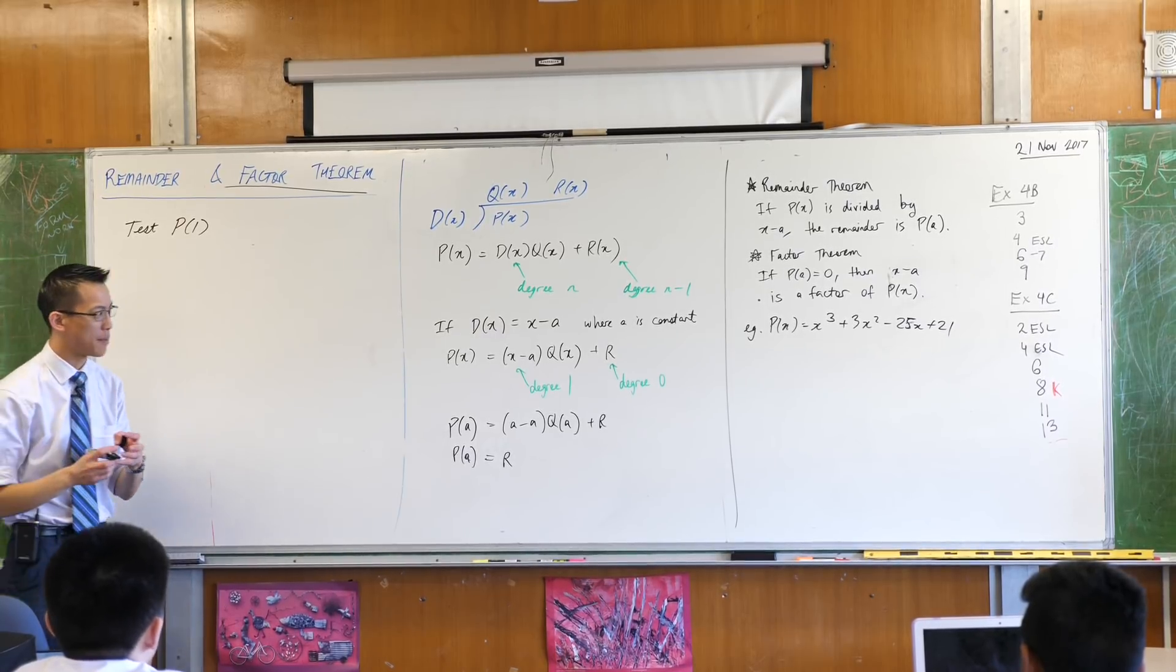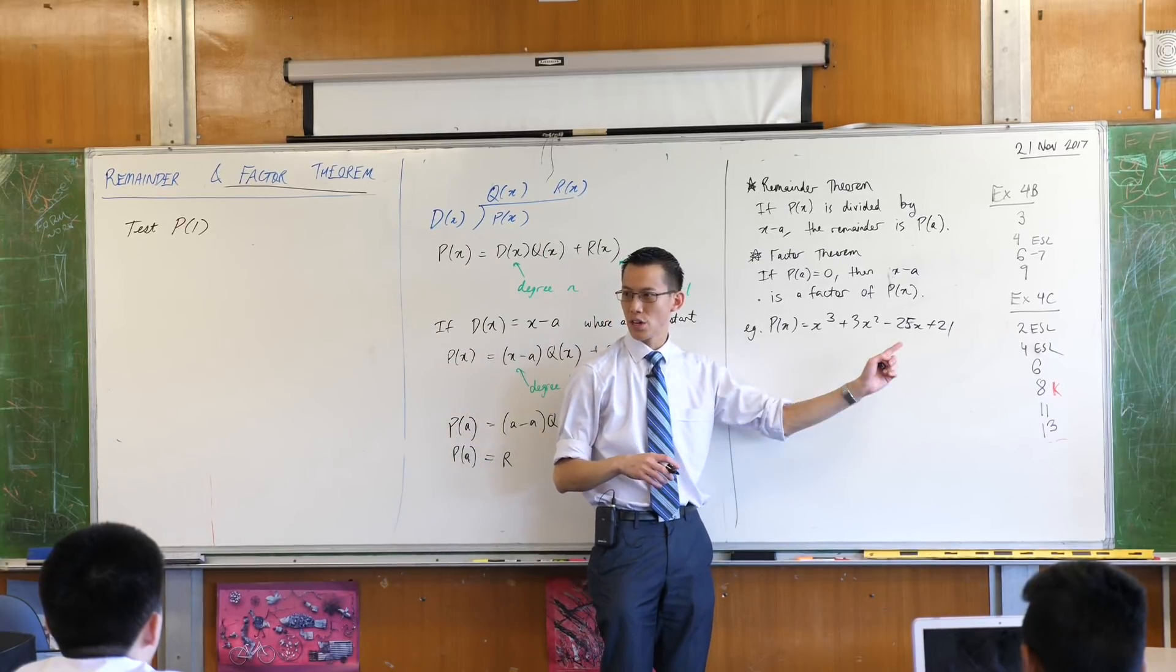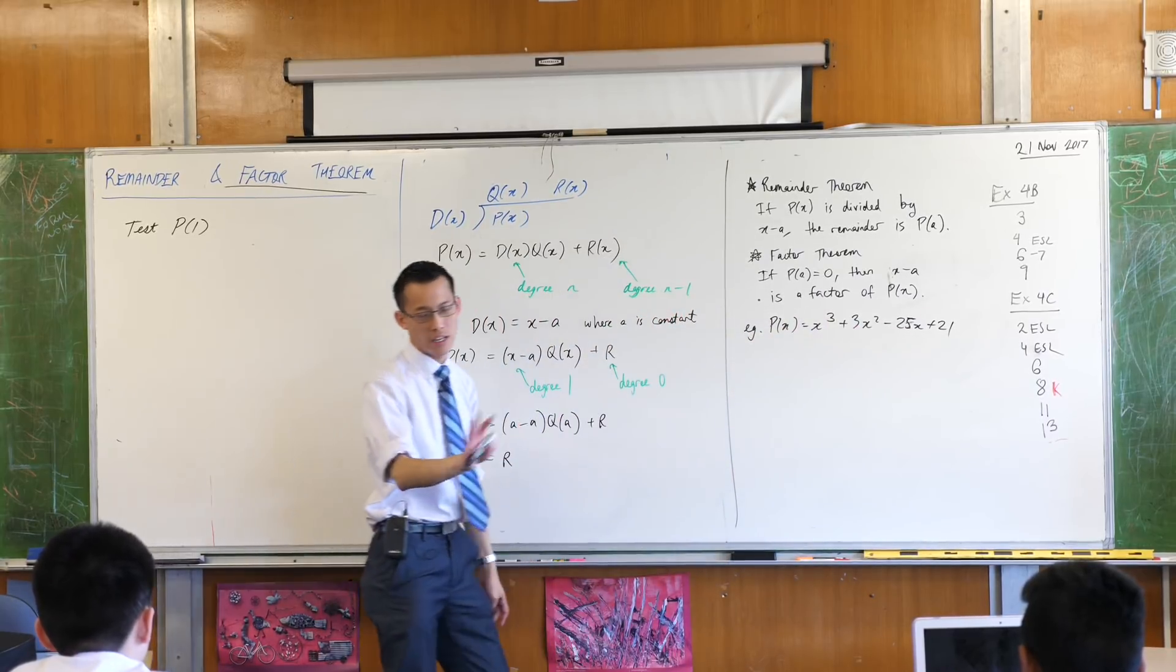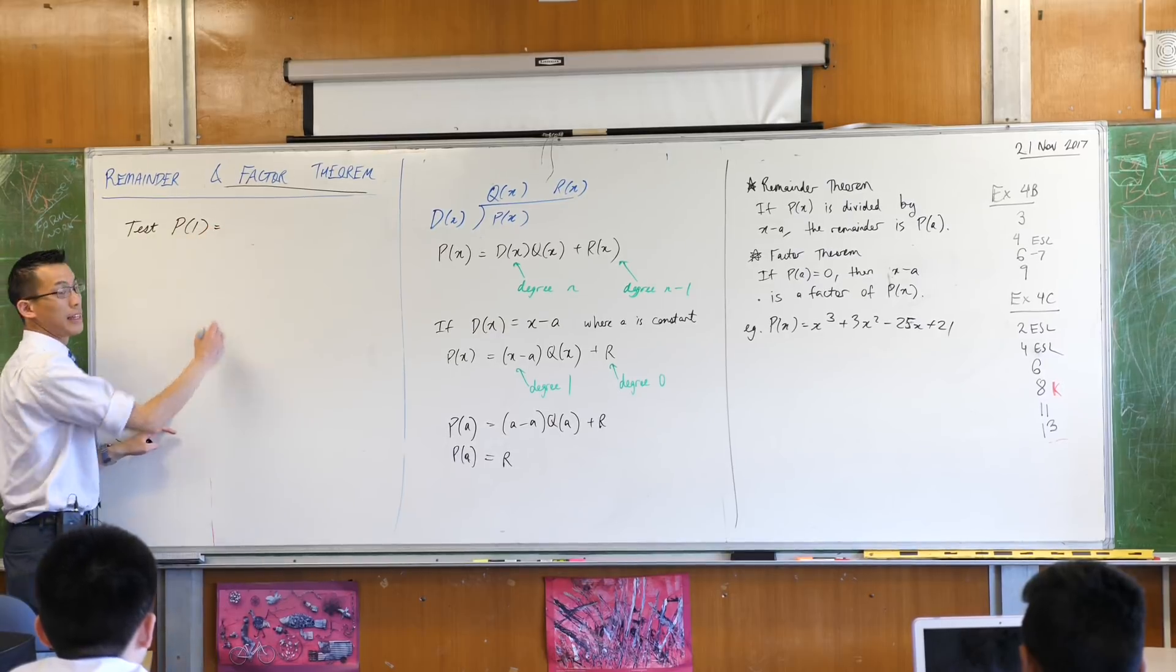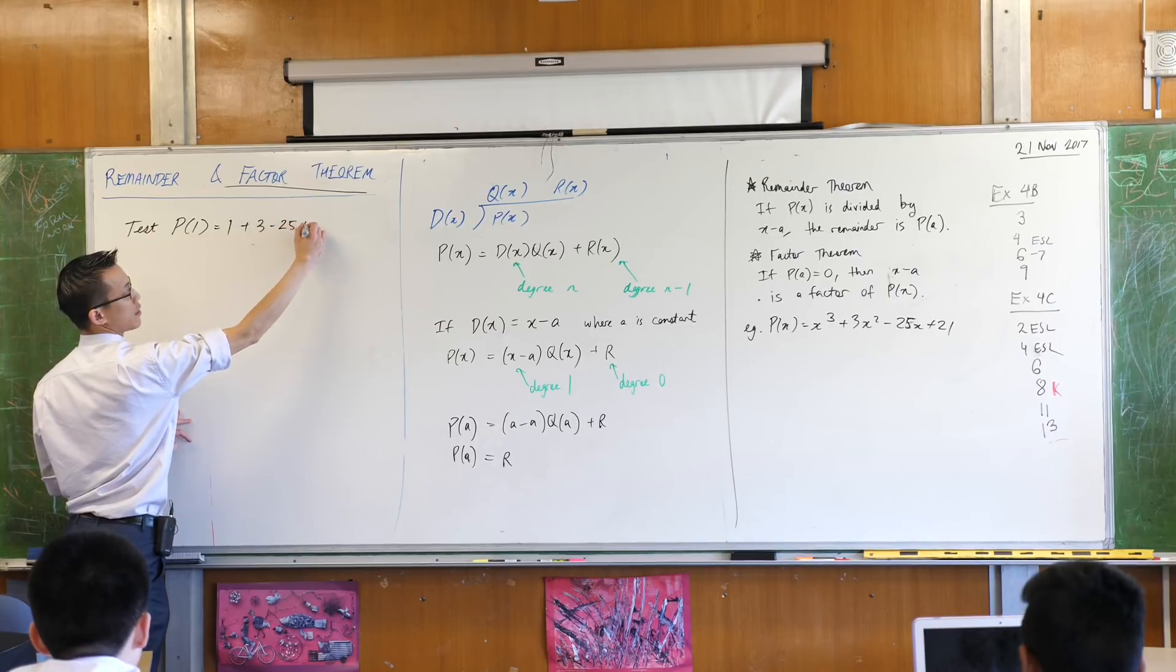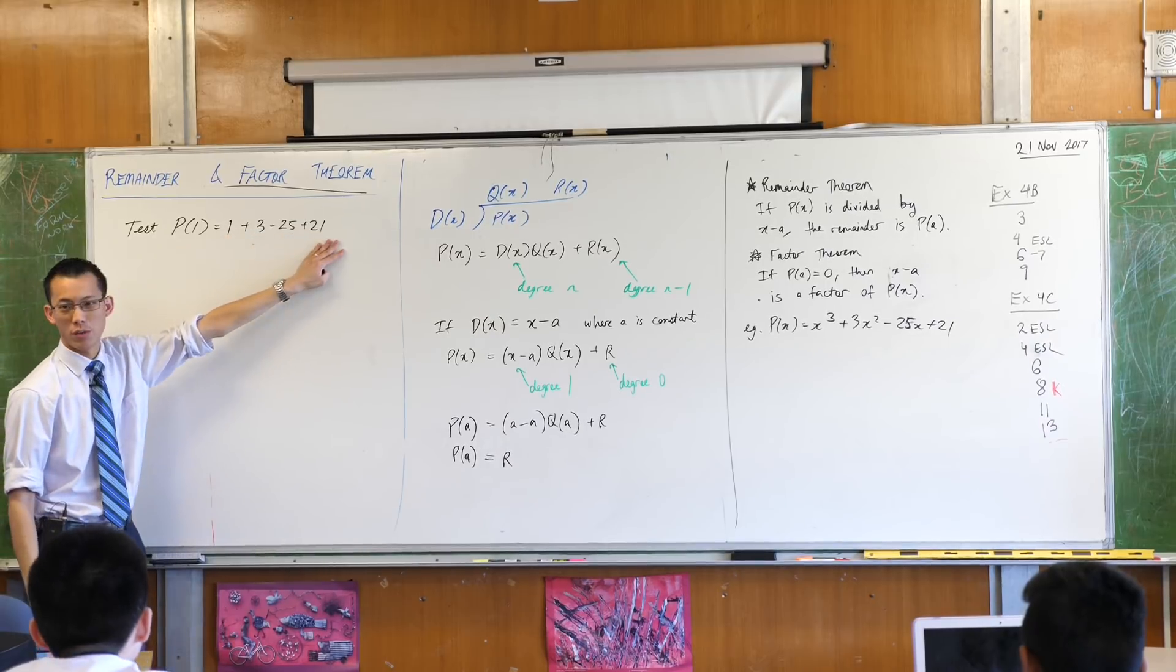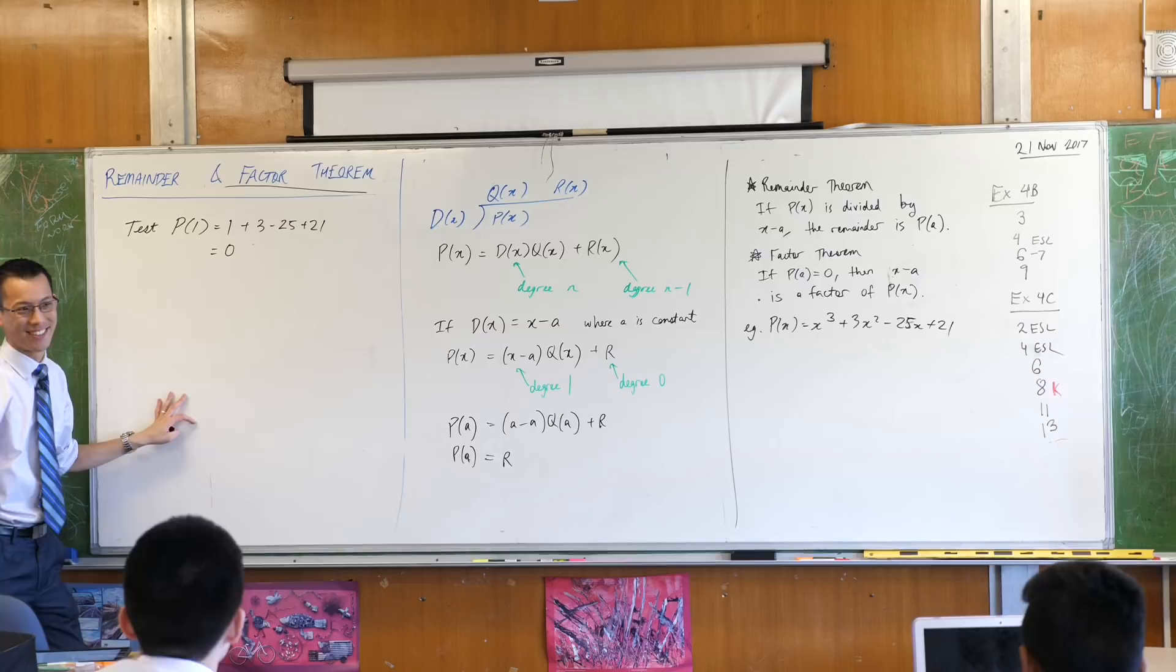I'm going to start at 1. 0 is kind of a natural place to start but I don't need to test 0 because you can already tell me what P(0) is, right? P(0) is 21 because all this disappears, you just get left with a constant. Don't need to test that, I'm just going to go straight to the next smallest number. Let's see what happens. I get 1 plus 3 minus 25 plus 21. 4 plus 21, that's 25. Oh, how convenient. It's 0.